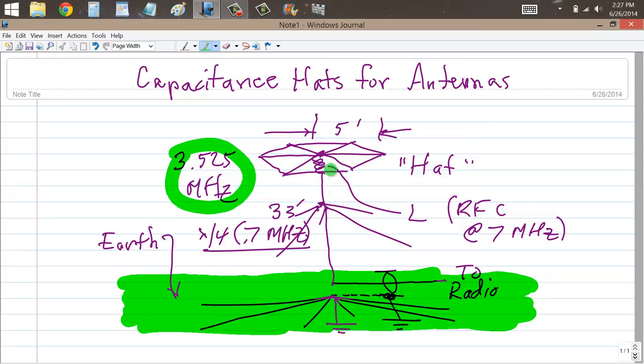And you could make that capacitance hat by guying the antenna from the top, placing insulators at the points where the radius is 17 feet, 16 and a half feet, and connecting them with spokes around like that. So that's another trick you can use. Capacitance hats, very interesting.